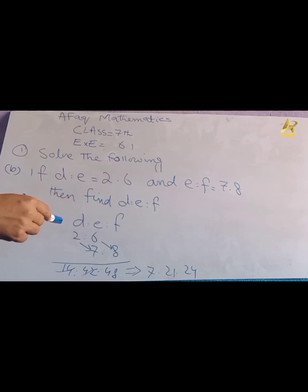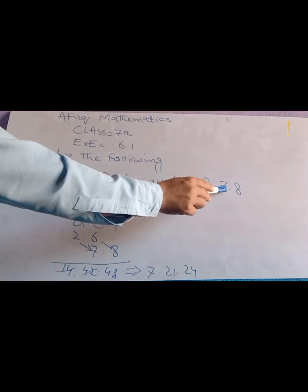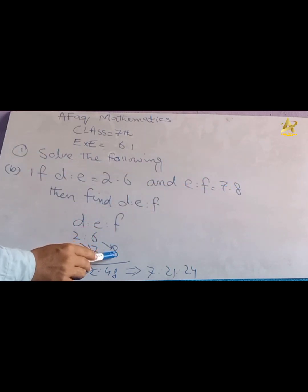We will solve this way. D ratio E is 2 ratio 6, and E ratio F is 7 ratio 8. We need to make E common in both ratios. We multiply: 2 times 7 equals 14, 6 times 7 equals 42, and 8 times 6 equals 48.